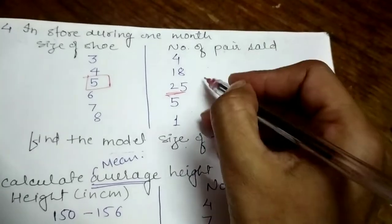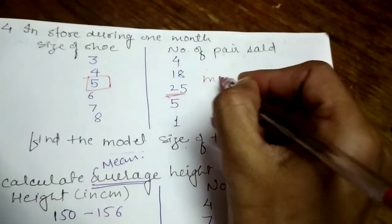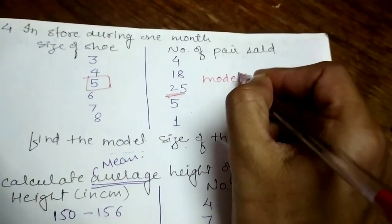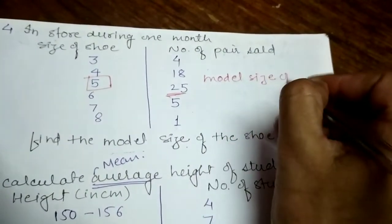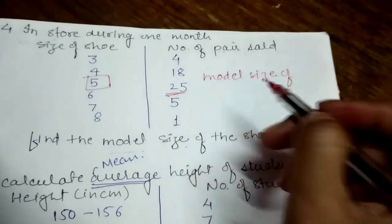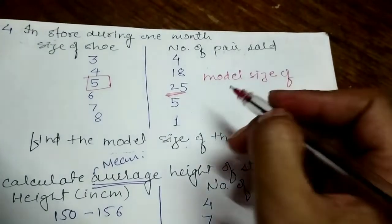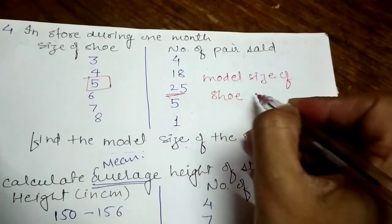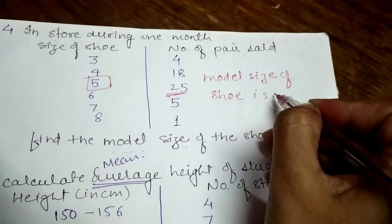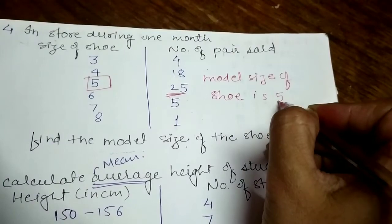So you can write the modal size of the shoe. The modal size is 5.